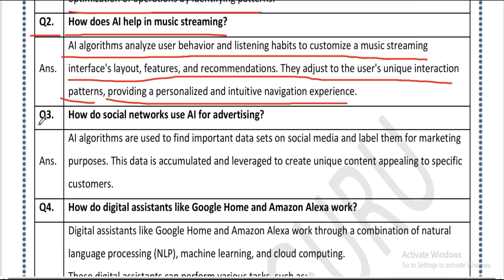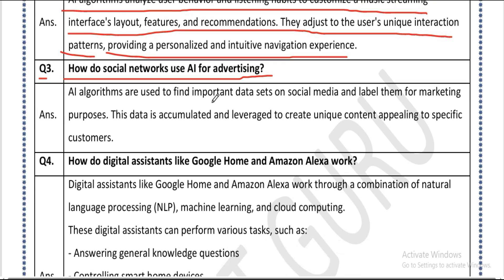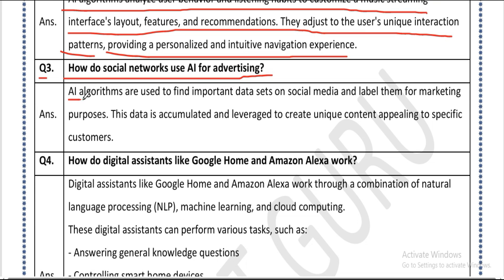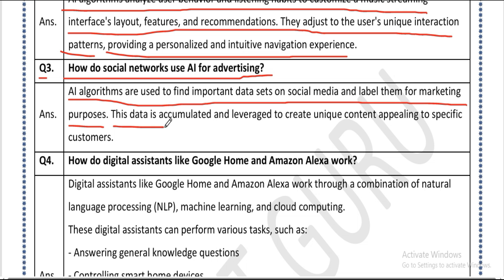Question three: how do social networks use AI for advertising? Answer: AI algorithms are used to find important data sets on social media and label them for marketing purposes. This data is accumulated and leveraged to create unique content appealing to specific customers.